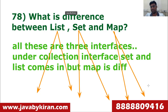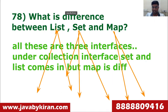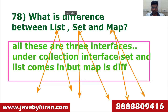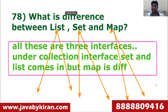Then if time permits, you can mention implementing classes: under List come ArrayList, Vector, and LinkedList; under Set come HashSet, TreeSet, and LinkedHashSet; under Map come HashMap, TreeMap, and LinkedHashMap. Going on to describe these things shows maturity and that you understand Java rather than just memorizing answers.